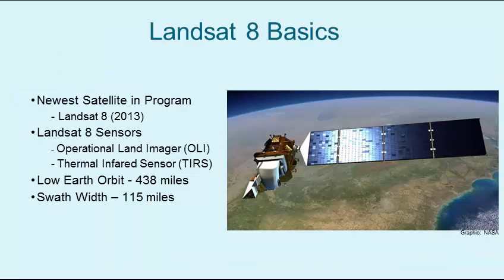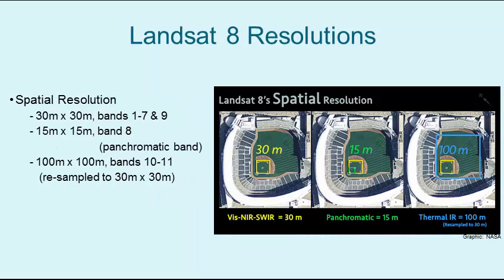Landsat 8 is the most current satellite in the Landsat program. This satellite has two sensors: the Operational Land Imager and the Thermal Infrared Sensor. It travels in a low Earth orbit and has an image swath of 115 miles. Landsat 8's spatial resolutions vary from 15 to 30 to 100 meter pixels, with 30 meter pixels — about the size of a baseball diamond and field — dominating the bands of information collected by the Operational Land Imager.